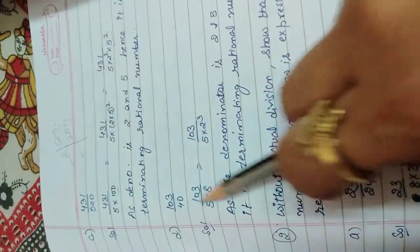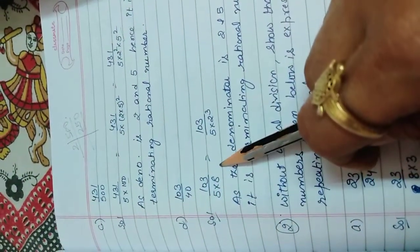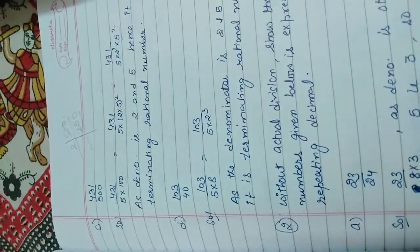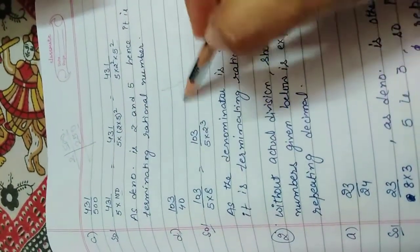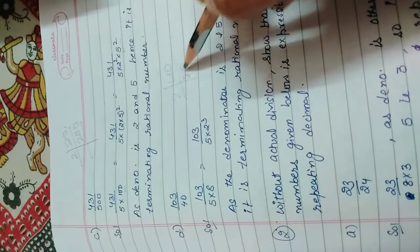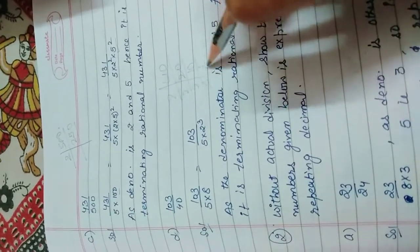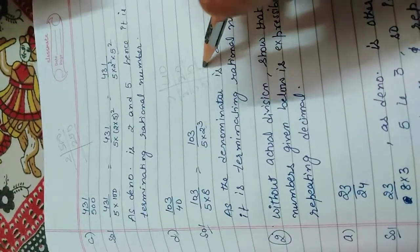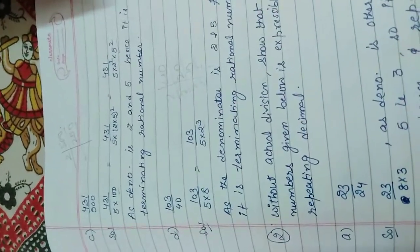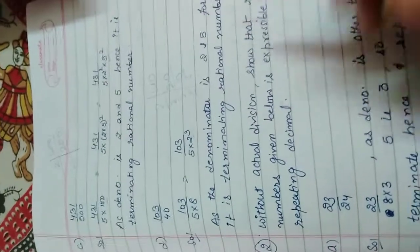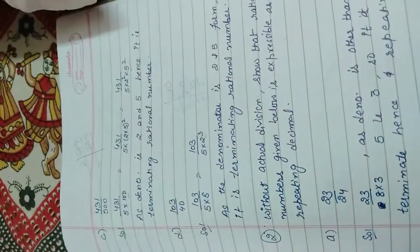Here also 40 is what? 5 times 8 is 40, 8 is what? 2 raise power 3. And if you don't know, you can do like this also. 40 to 20s are, 2, 10s are, 2, 5s are, then 5, 1s are. So 1, 2, 3, 2 cube into 5. So this is 103 by 5 into 2 cube. As the factor is in the form of 2 and 5, that's why this is terminating.